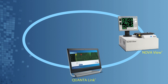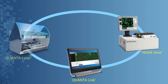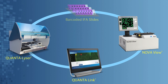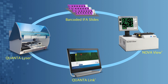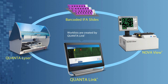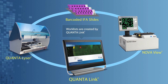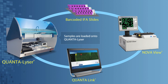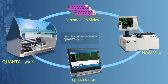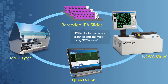NovaView integrated with Quantilink and Quantilizer reduces hands-on time and improves productivity. Electronic orders are received from the laboratory information system, and work lists are created by Quantilink. Samples accessioned by the laboratory are loaded onto Quantilizer, and NovaLight IFA slide barcodes are scanned.